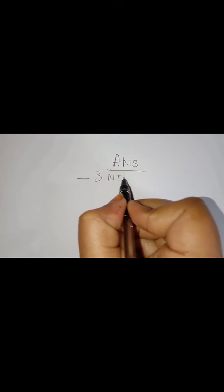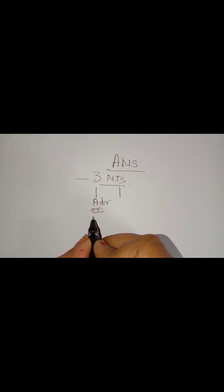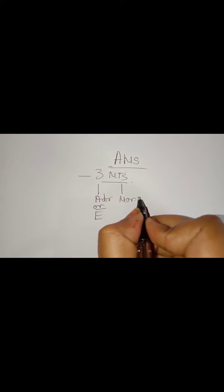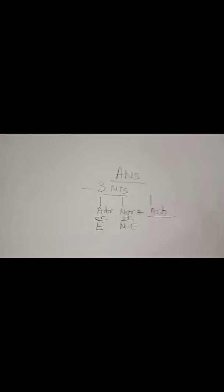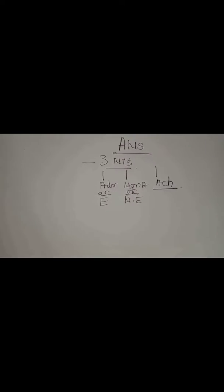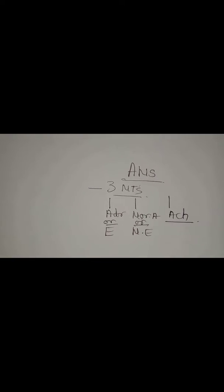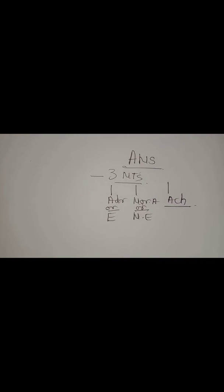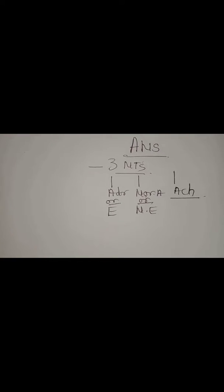Wherever we hear ANS, we should keep in mind that there are three main neurotransmitters that act here. Those are adrenaline, also known as epinephrine; noradrenaline, also known as norepinephrine; and the third one is acetylcholine. These three main neurotransmitters act as the ANS makers — let's name them as engineers.